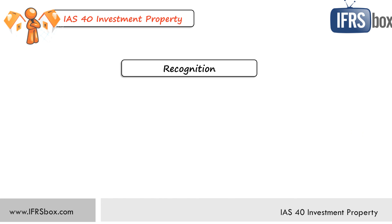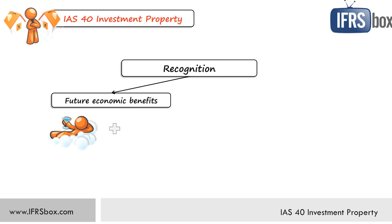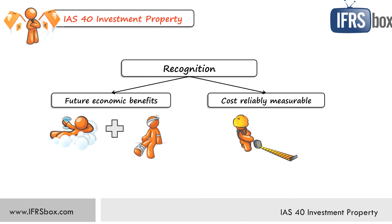Let's talk about when to recognize investment property in your financial statements. You can do it when two conditions are met: it is probable that the future economic benefits associated with the investment property will flow to the entity — think about associated rewards and risks — and the cost of the investment property can be measured reliably. This rule is very similar to the rule in IAS 16 for property, plant and equipment.